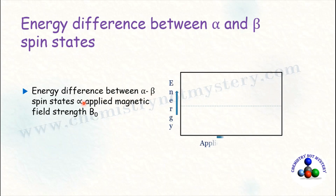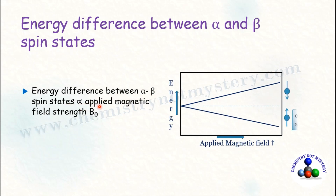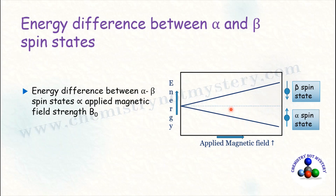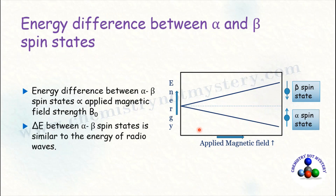The energy difference between the alpha and beta spin state is directly proportional to the applied magnetic field strength, denoted by B0. So when you increase B0, the energy difference between alpha and beta spin state increases. This energy difference is similar to the energy of radio waves, which is why NMR spectroscopy uses electromagnetic radiation of radio frequency.